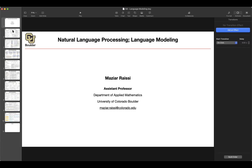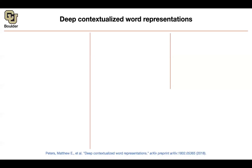We already saw a version of transfer learning: when we were doing word embeddings, we were doing some transfer learning at the first layer of our neural networks for classification or translation. The field of natural language processing these days is largely taken over by transfer learning — you could almost rename NLP to be transfer learning.